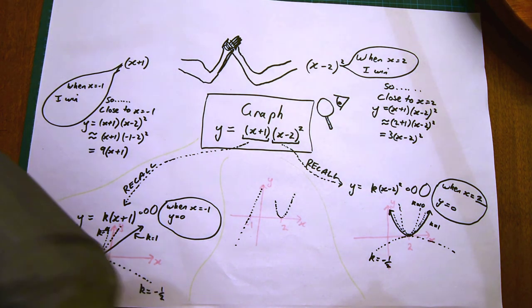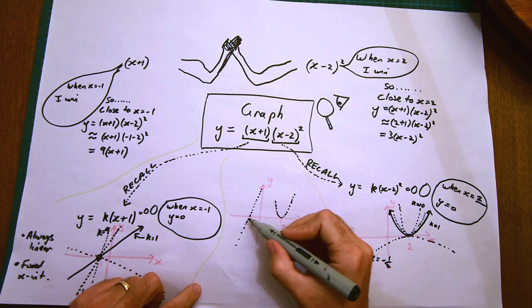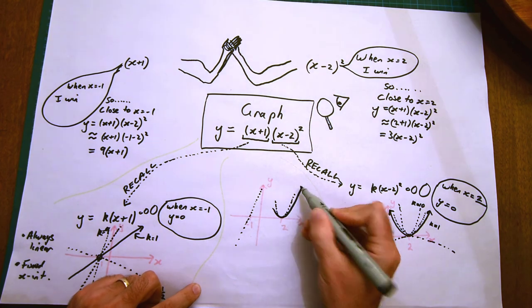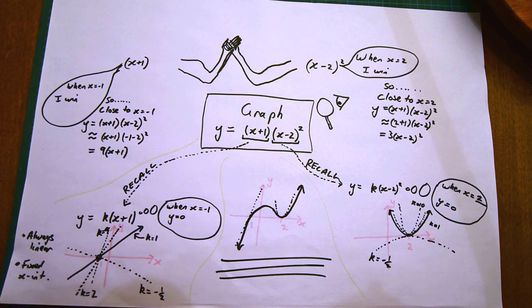On top of 2, let's draw in a fairly steep parabola—that's our 3 times x take 2 all squared. The cubic has to be a curve that fits these behaviors at those places. And we're done.